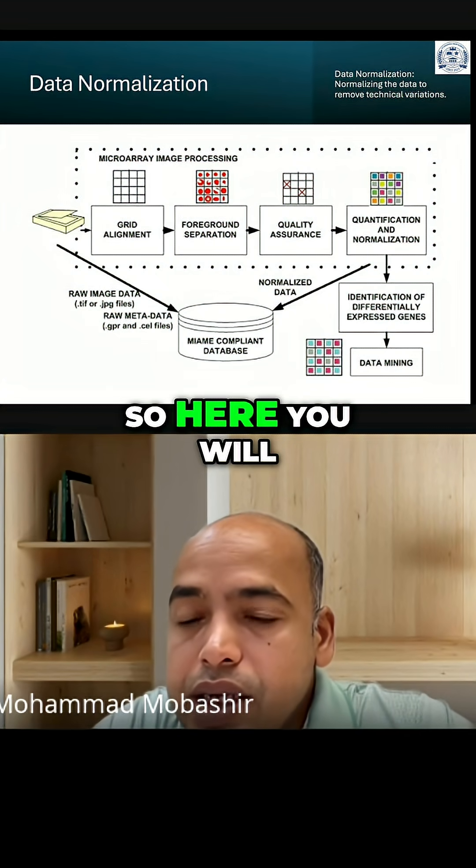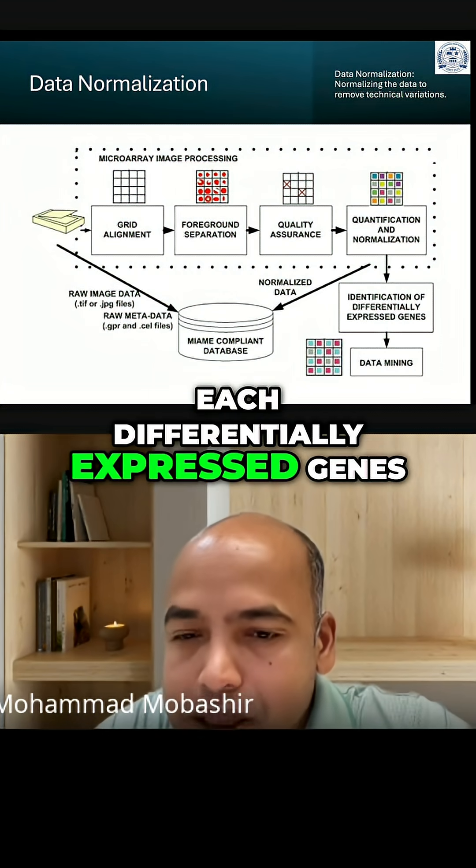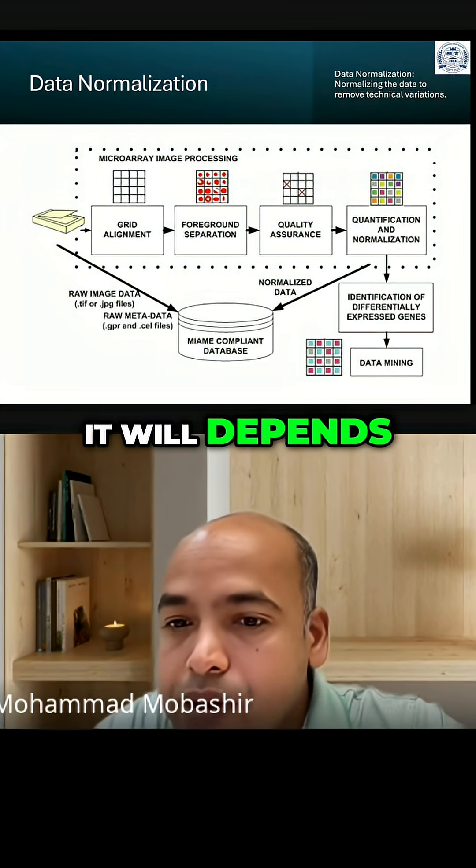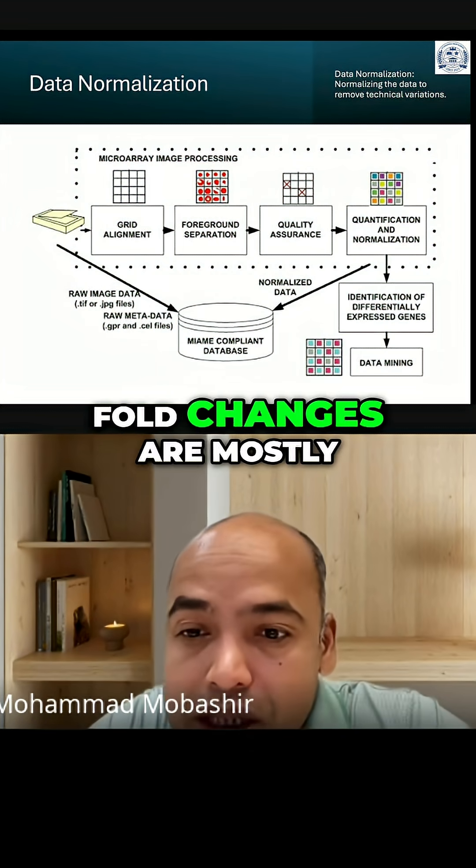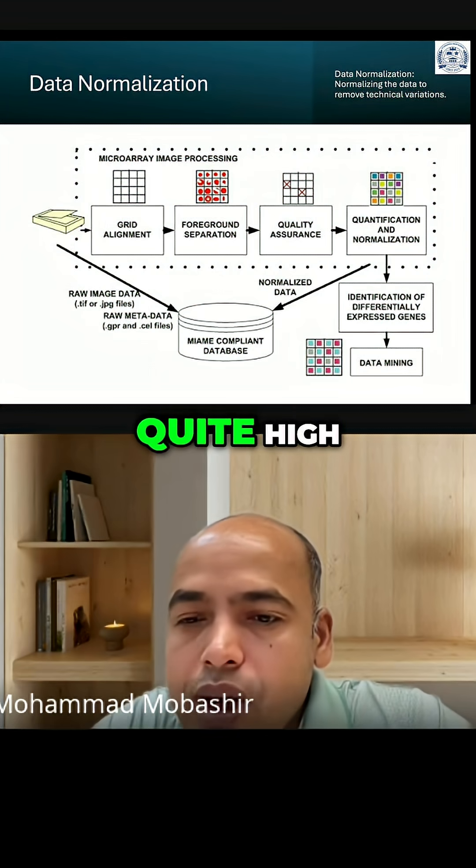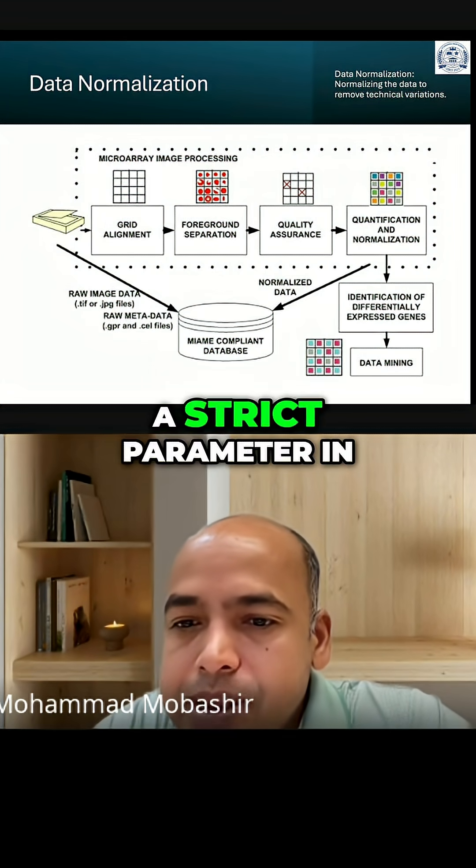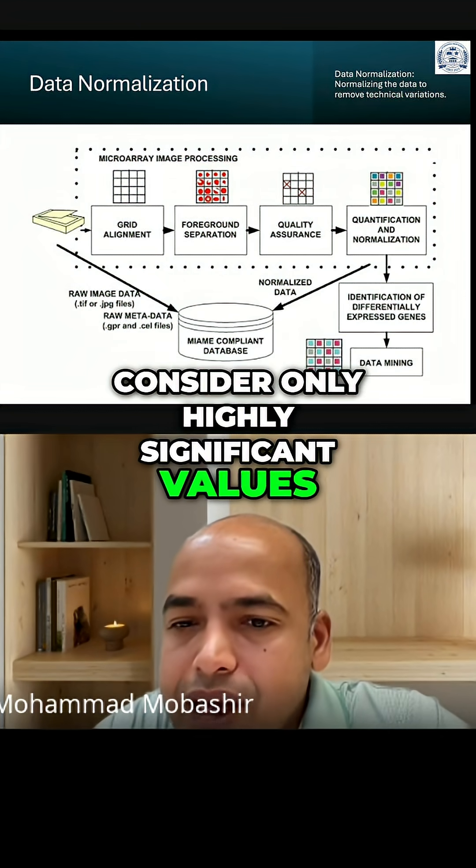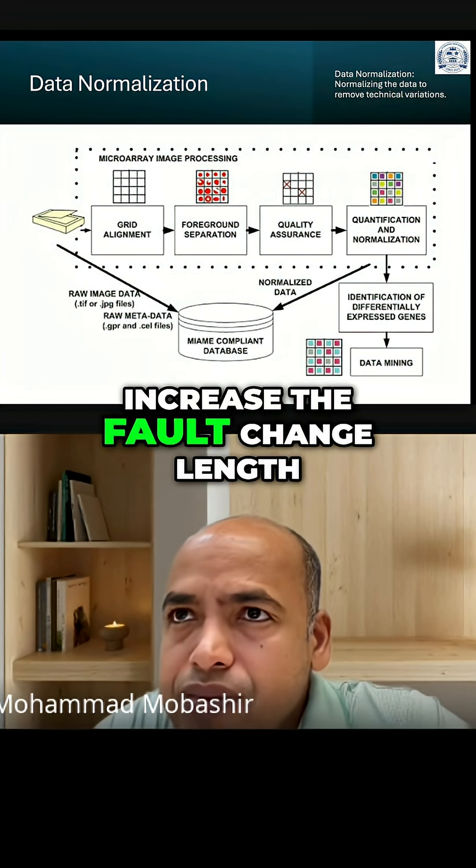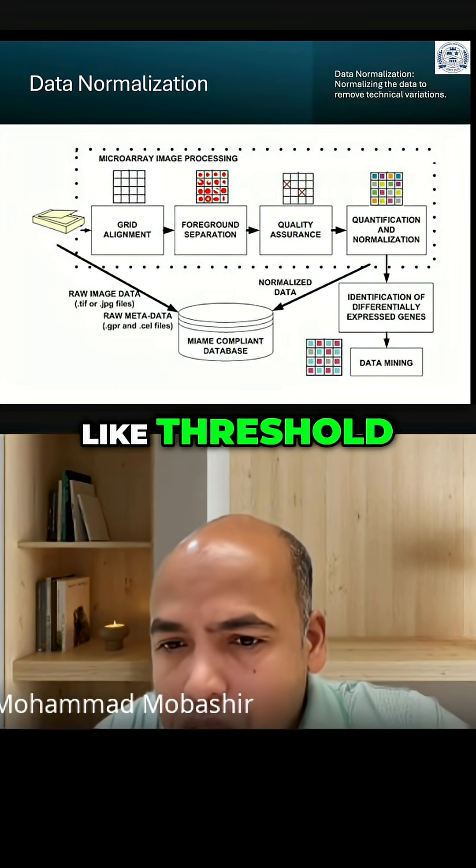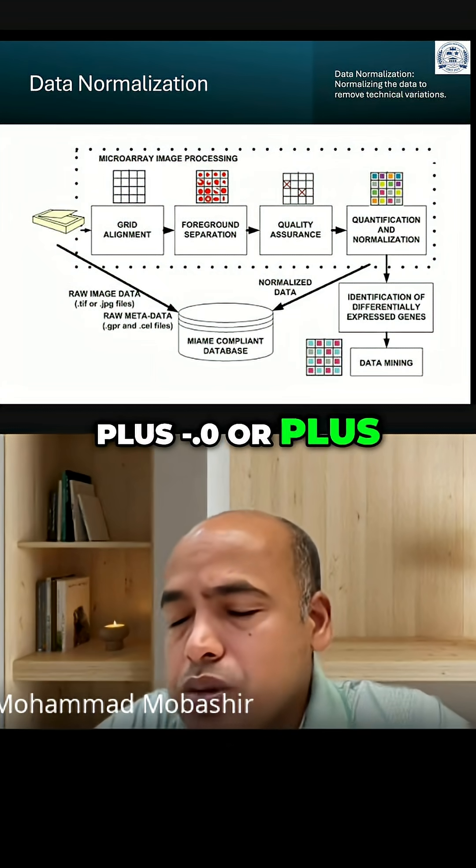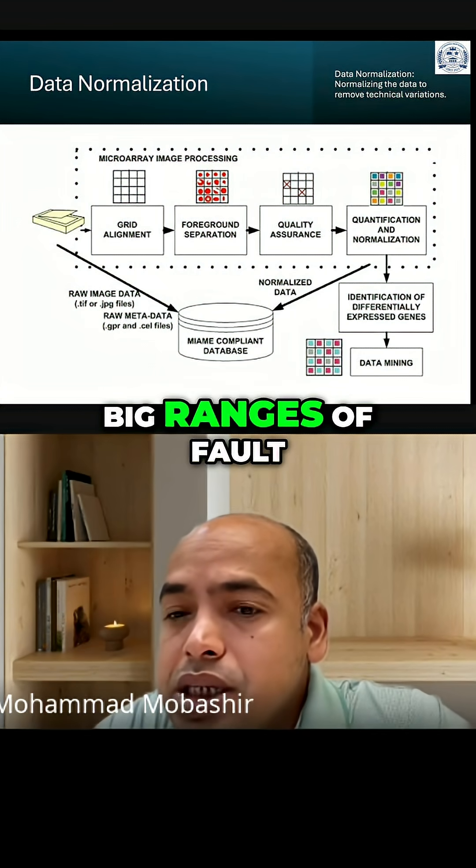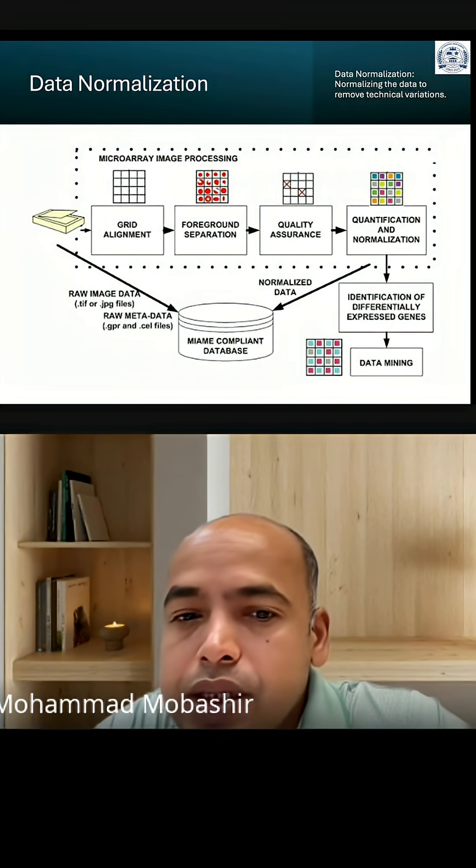So here you will have two values for each differentially expressed gene, but fold changes are not kind of fixed things. It will depend. For example, in human cancer, the fold changes are mostly quite high. Then, if you want a strict parameter in order to consider only highly significant values, then you could also increase the fold change threshold, like plus minus 3.0 or plus minus 4.0 or plus minus 5.0. It depends on how big the ranges of fold changes are present.